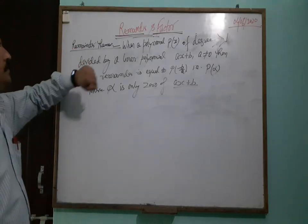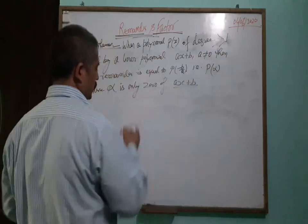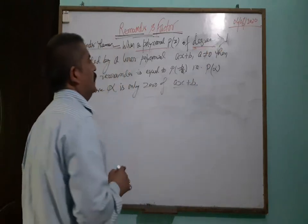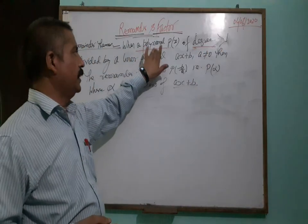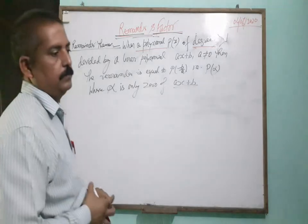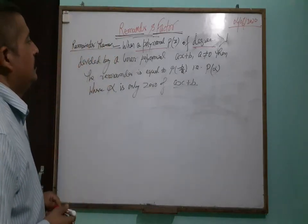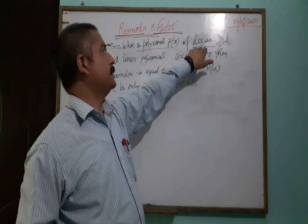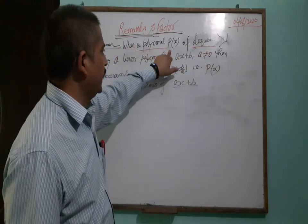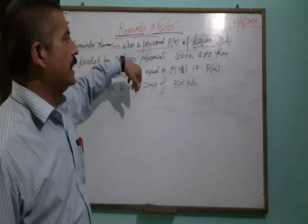Now the Remainder Theorem. When a polynomial p(x) of degree greater than or equal to 1 — that means the polynomial may be linear or more than linear: quadratic, cubic, biquadratic, or anything. A polynomial is an expression with more than two terms. The degree is the maximum power of the expression.